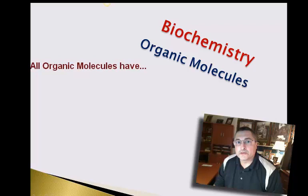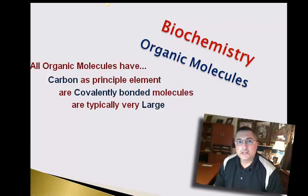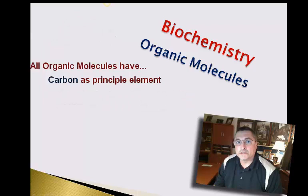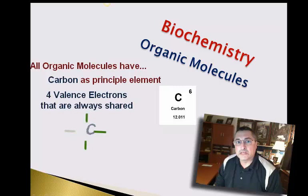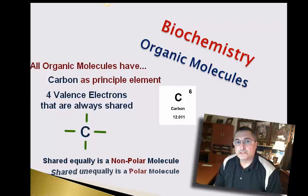Organic molecules are fairly easy to identify in nature, because an organic molecule will always have carbon as its backbone. There's only one exception in nature where carbon is found in a molecule that is not organic, and that's carbon monoxide. The advantage is that every carbon atom has four valence electrons, which means it can never gain nor lose electrons, simply share them. If they share equally, we have a non-polar molecule; if they share unequally, we have a polar molecule.